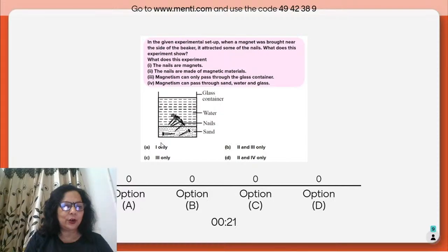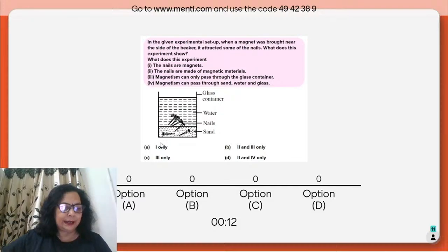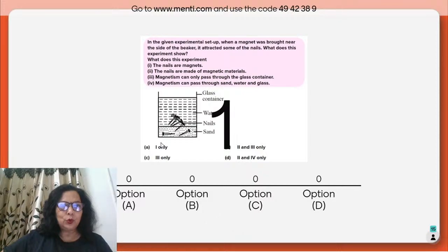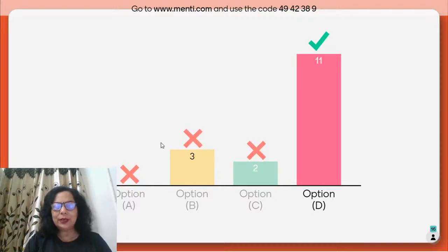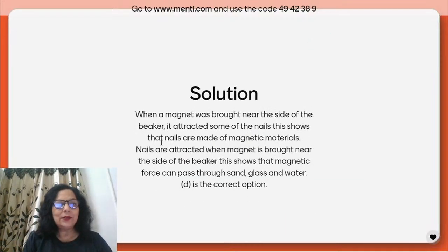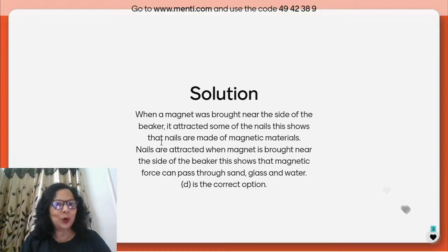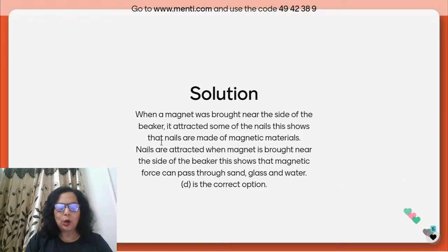Eleven children got it correct. Option D is correct — when a magnet was brought near the side of the beaker and attracted some nails, this shows that nails are made of magnetic material, and that magnetic force can pass through sand, glass, and water. Hence option D was correct.